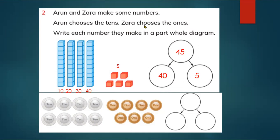And Zara chooses the ones. Here are Zara's numbers. Zara chooses the ones. She took five blocks and she made ones. Because there are not tens. Write each number they make in a part, whole, diagram.